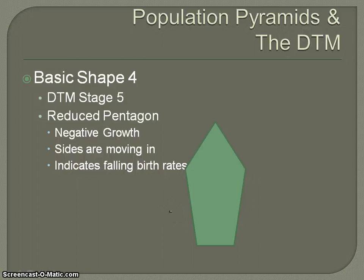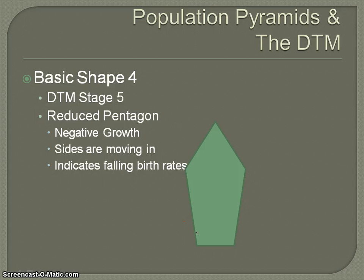Those are the four basic shapes and how they relate to the population pyramid and the demographic transition model. No country is going to follow the basic shapes exactly, but if you look at the general shape and the base of the pyramid, it can help you understand what stage of the demographic transition model a country is in, as well as the levels of development, economic and social conditions, and so forth. I hope you found that helpful. Come back next time and we will be talking about population policies.